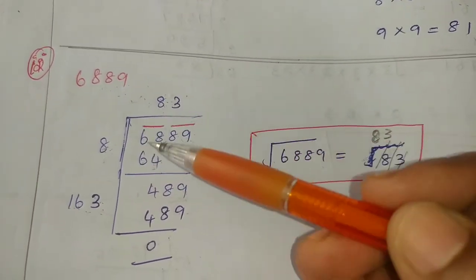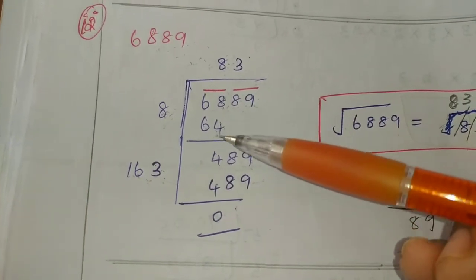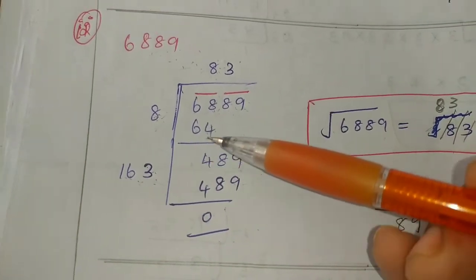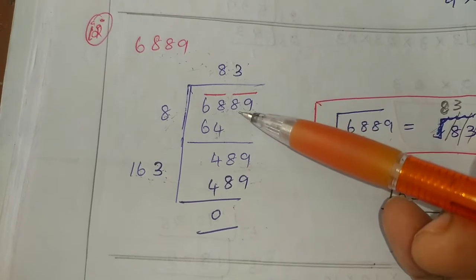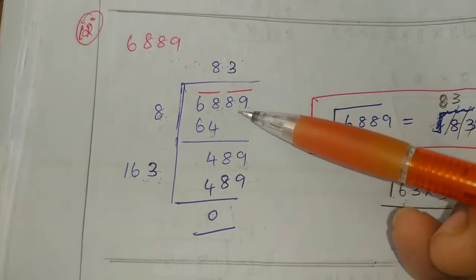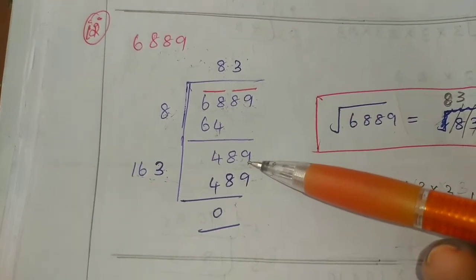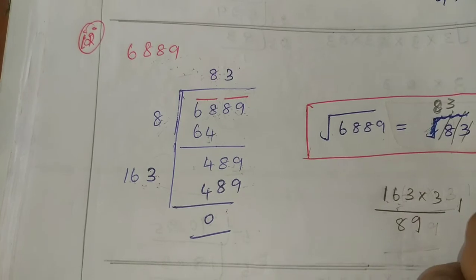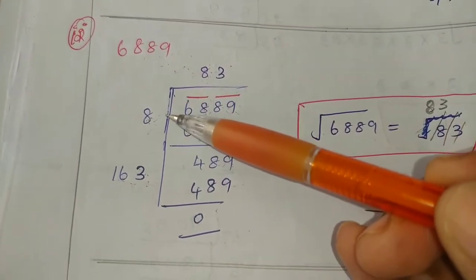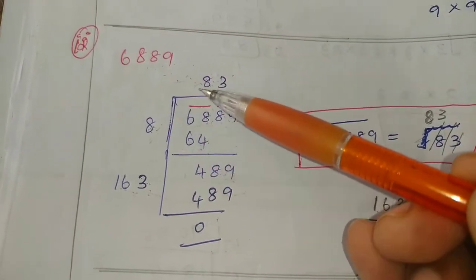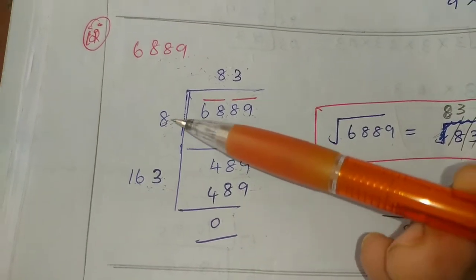So 8 times 8 is 64. Now 8 is 64. It is 4. Next, here is 1 single value. It is division. The pair is the pair of values. The pair of values is 89. Now, side line is the size of the values. 8 times 8 is 64.